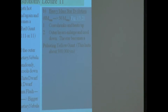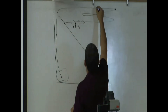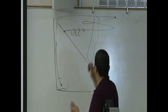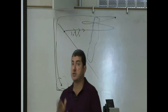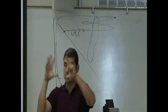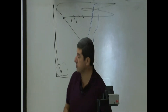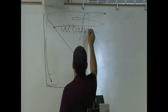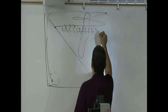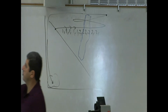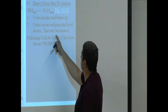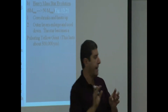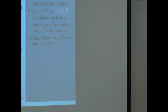So if we draw the instability strip again, somewhere like this, whenever it's going through that strip it's going to turn into a pulsating thing again — a pulsating giant. The outer layers enlarge and cool down, and the star becomes a pulsating yellow giant. The pulsating part happens only when it's in that region.